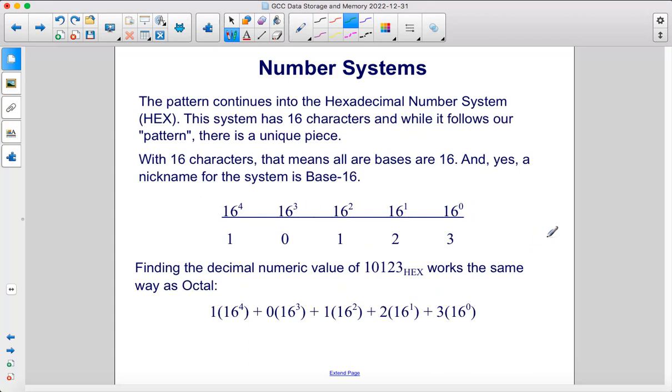The pattern continues into the hexadecimal number system. This system has 16 characters, and while it follows our pattern, there is a unique piece. With 16 characters, that means all are bases of 16, and yes, a nickname for the system is base 16. Finding the decimal numeric value of 10123 in hexadecimal works the same as with octal. So 3 times 16 to the 0 power, plus 2 times 16 to the 1st power, and so on. You add them all together, and you'll get the decimal equivalent.